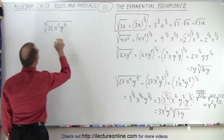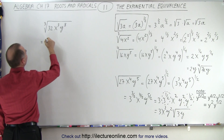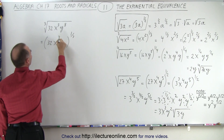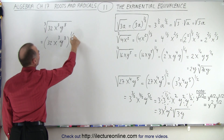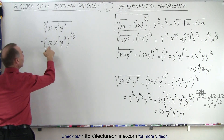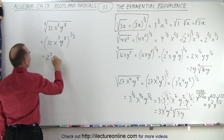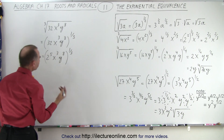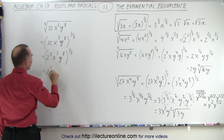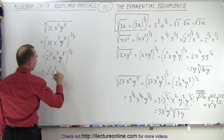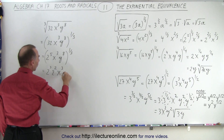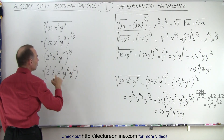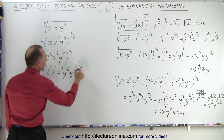Now let's look at the cube root of 32x³y⁸, which can be written as the same quantity to the one-third power. So we have 32x³y⁸ to the one-third power. Now 32 can be written as 2 to the fifth power. So this is 2 to the fifth power, x to the third power, y to the eighth power, all to the one-third power. We can say this equals 2 to the third power times 2 to the second power, times x to the third power, times y to the sixth power times y to the second power. Notice I've separated the exponents so that any multiple of 3 comes out, then I raise all of this to the one-third power.